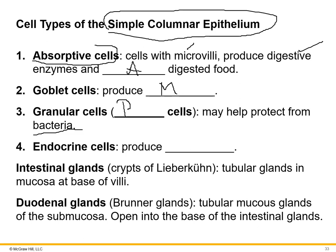Some glands are pinched off from the base of the indents between villi and are called crypts of Lieberkühn. In the duodenum, there is an additional type of gland called Brunner's gland, which secretes bicarbonate-containing mucus that neutralizes the acidic chyme coming from the stomach (pH ≤ 2), protecting the duodenum from stomach acid.